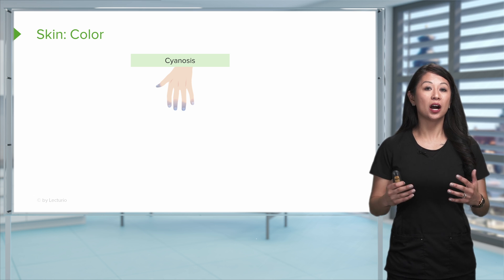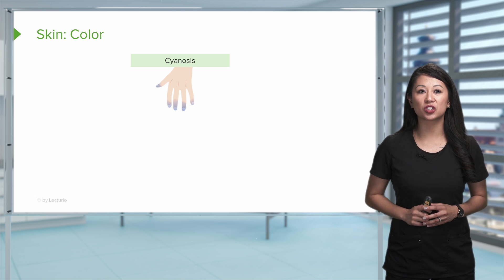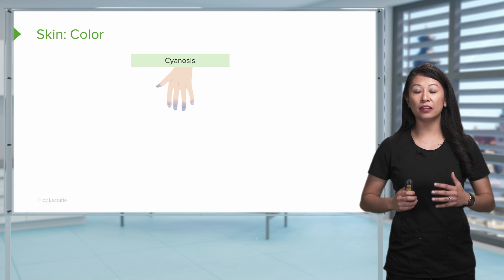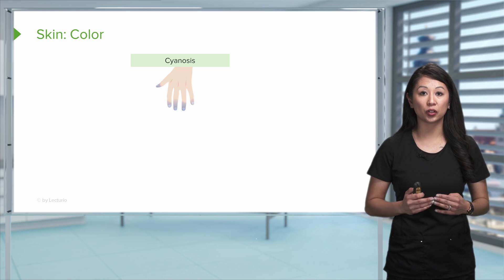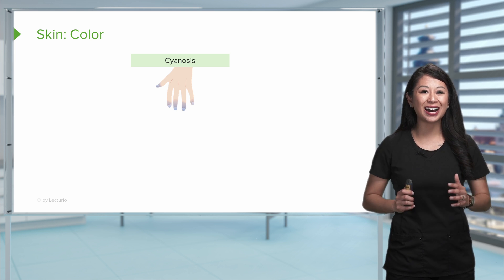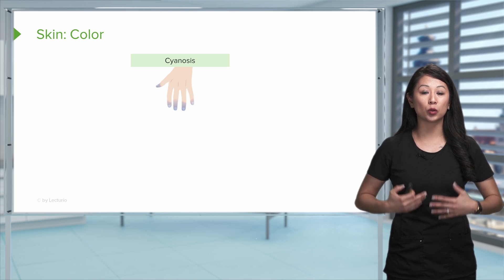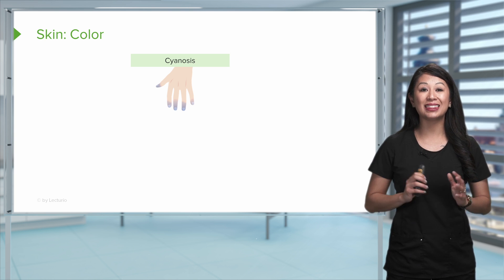Don't forget when we're talking about a skin assessment, color is an easy indicator that something's going on. If you see cyanosis or a bluish color in any of the patient's extremities, this could mean that there's not enough oxygenation to the patient's fingers, their toes, or lips, or face. And this is an emergency.